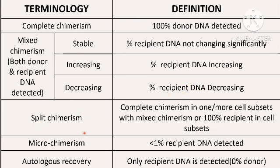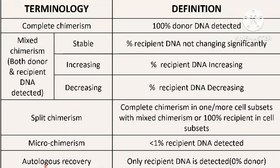Split chimerism means complete chimerism in one or more cell subsets with mixed chimerism or 100% recipient DNA in other cell subsets. Micro chimerism means less than 1% recipient DNA. Autologous recovery means only recipient DNA is detected with 0% donor DNA. So the main categories are complete chimerism, mixed chimerism, split chimerism, and micro chimerism, with autologous recovery meaning only recipient DNA is detected.